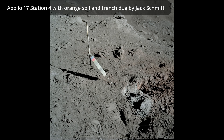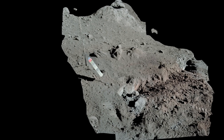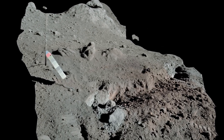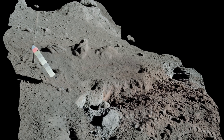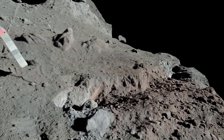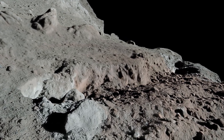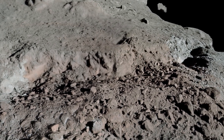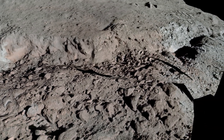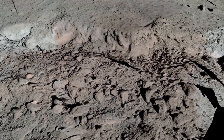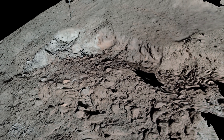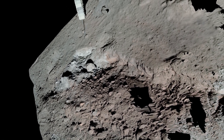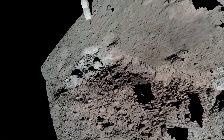This model was generated using six out of the seven available photos showing the trench dug at station four. This is the highly publicized orange soil which was found during EVA 2 at Taurus Littrow. The tripod-like object is a gnomon and photometric chart assembly, which is used as a photographic reference to establish local vertical, sun angle, scale, and lunar surface color.